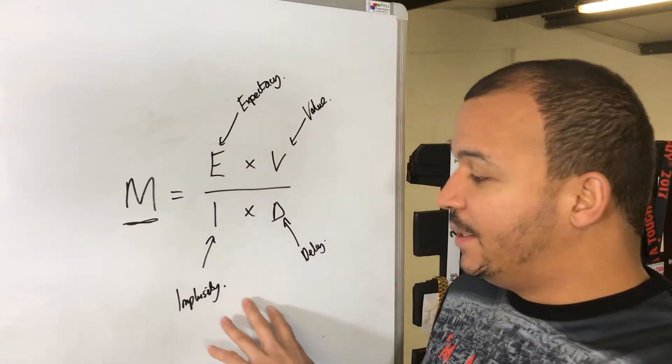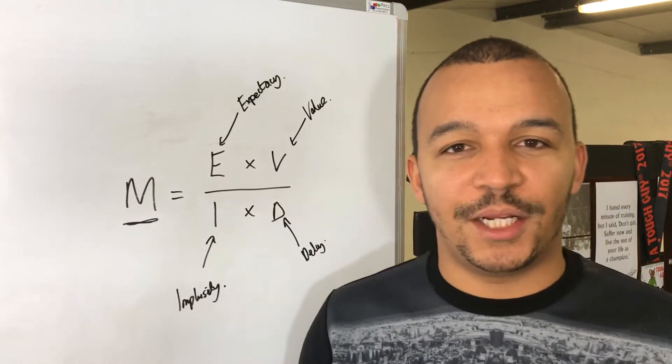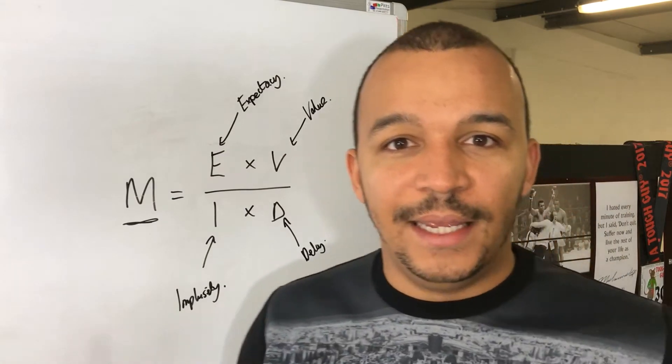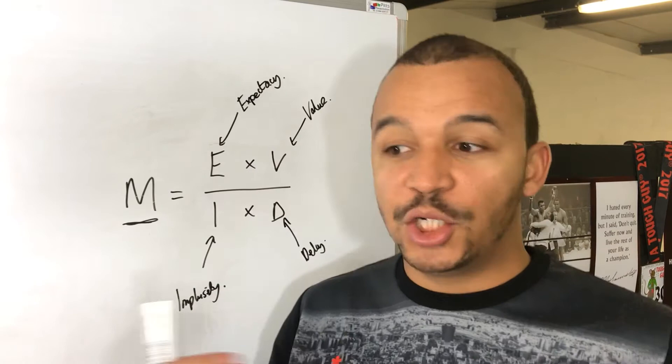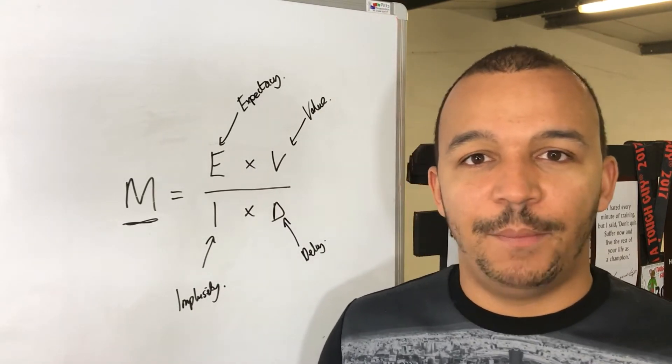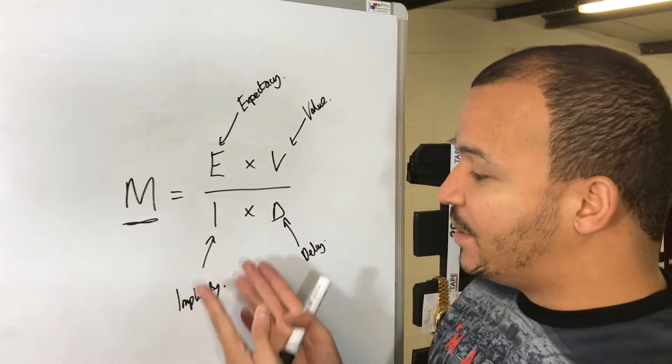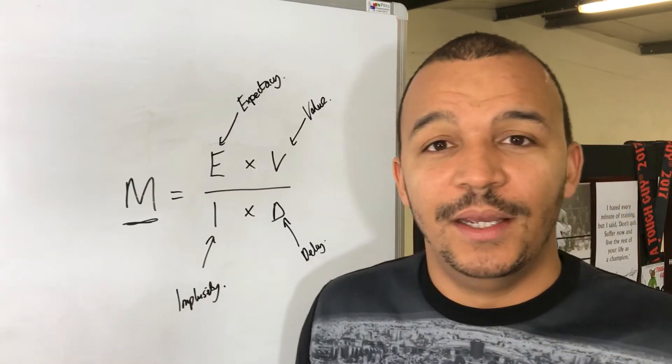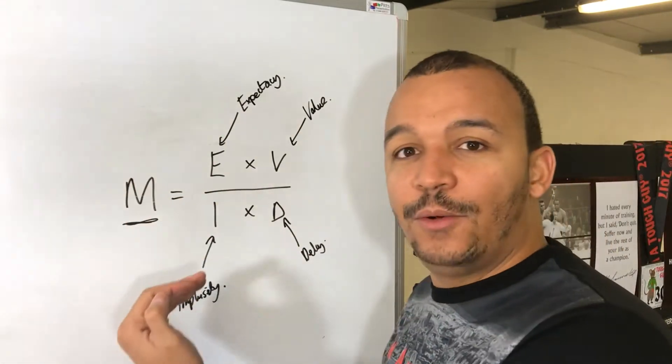And this D stands for delay. So what that means basically is this is where it comes to distractions and shiny object syndrome. If you are always feeling that impulsivity to do something new or you're getting distracted from notifications on your phone or you're being distracted by somebody coming into the room, that's going to increase. If you've got high impulsivity, if you're always going from one thing to another, that is going to jack that number up, which is going to bring down your motivation.